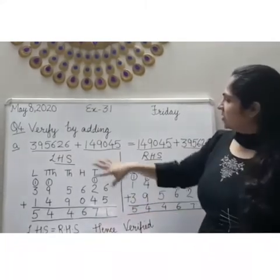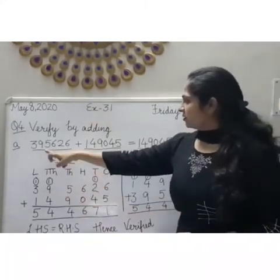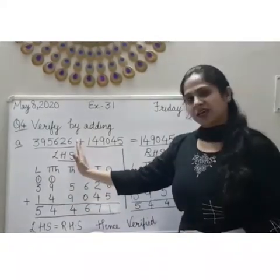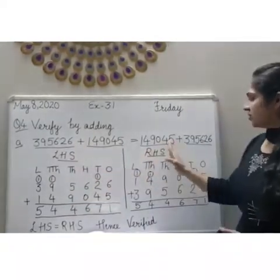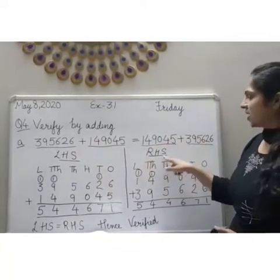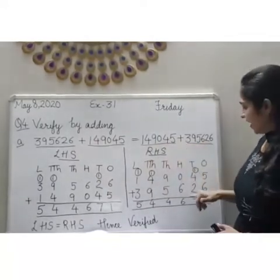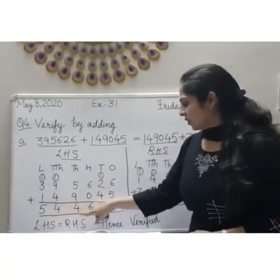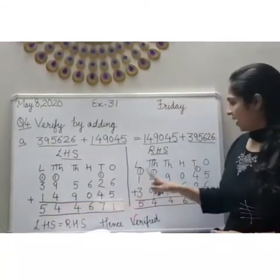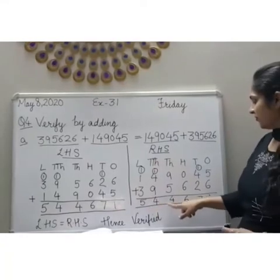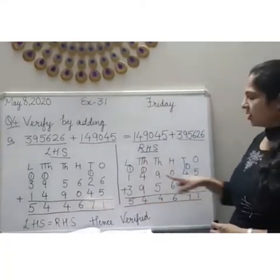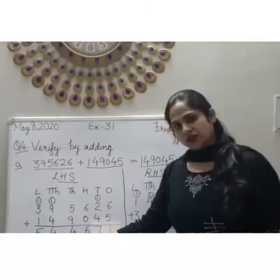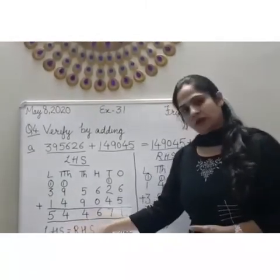Now let's check it. We add these two numbers on the left hand side and these two numbers on the right hand side. We get the answer 5,44,671 on both sides. Both sides the sum is same, so LHS is equal to RHS. Left hand side is equal to right hand side.